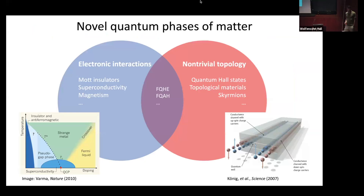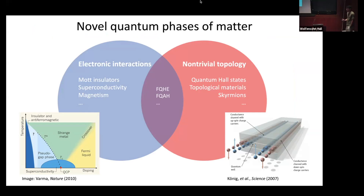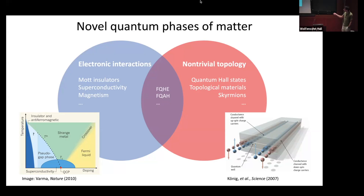Before getting into the details of the experiment, I want to put this in a broader context. Generally speaking, as condensed matter physicists, some of the most interesting phases of matter can be tied back to a couple of key ideas that have been decades in the making. They're very challenging experimental systems to study, very challenging theoretical problems, and although we've made quite a bit of progress, there's still a lot to be done.